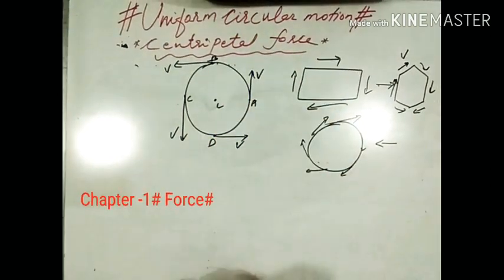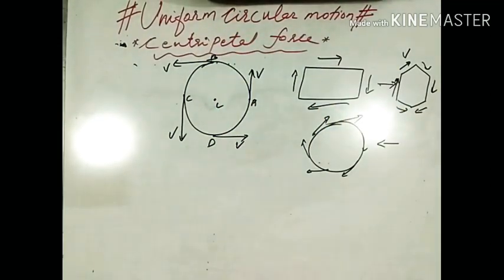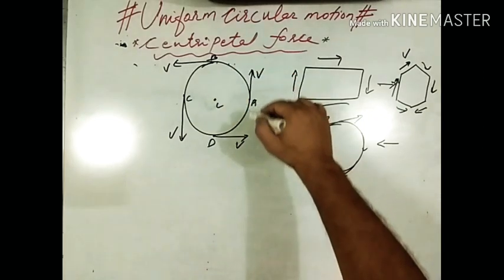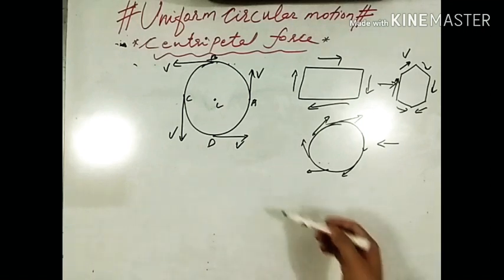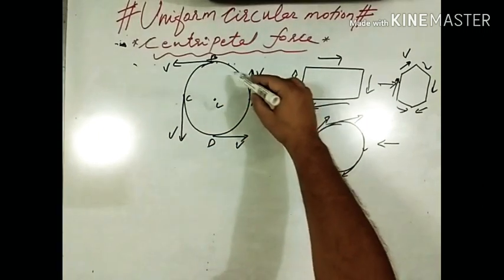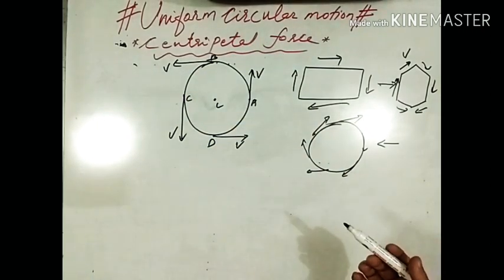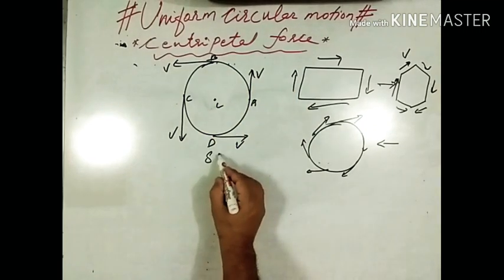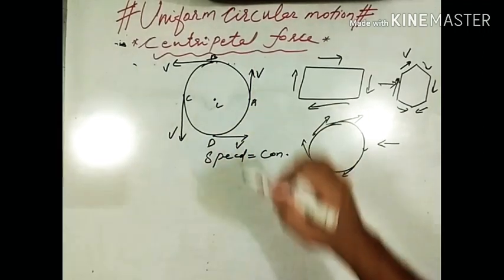What is uniform circular motion, and why is it called uniform? When a particle moves with a constant speed in a circular path, this motion is called uniform circular motion. In such motion, the particle travels equal distance in equal intervals of time. When a particle covers equal distance in equal intervals of time, we say its speed is constant or uniform. So, in uniform circular motion, speed remains constant.